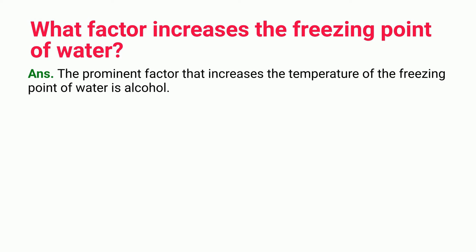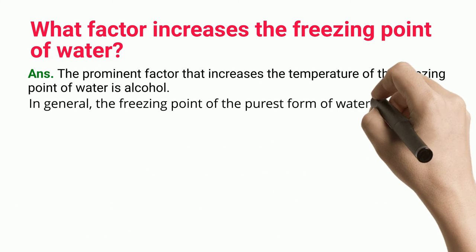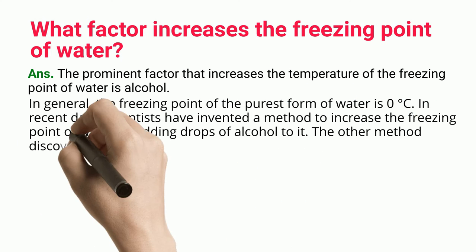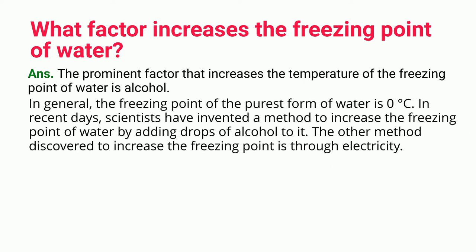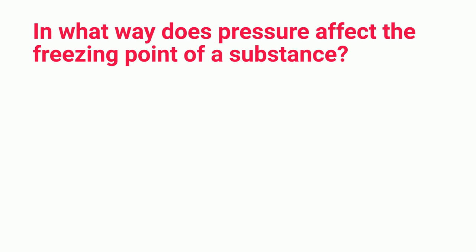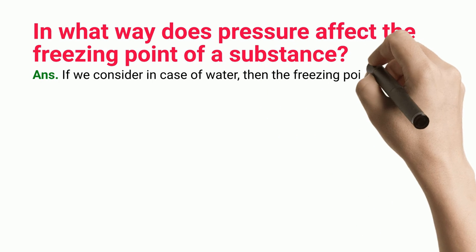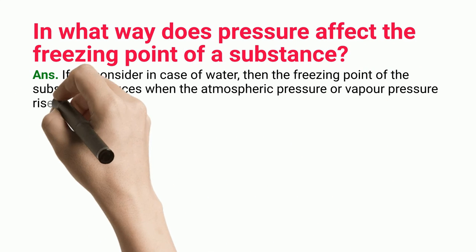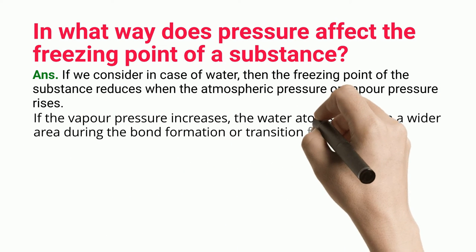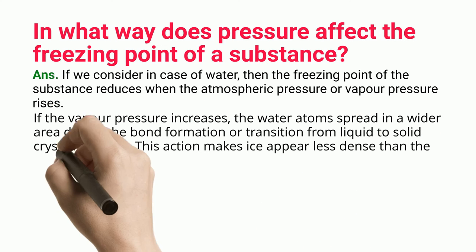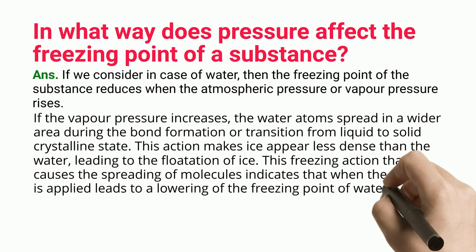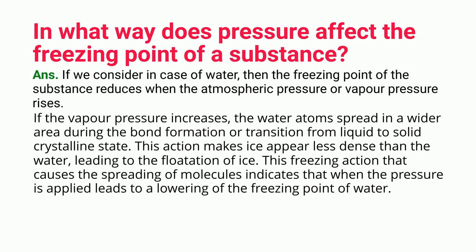What factor increases the freezing point of water? The prominent factor that increases the freezing point of water is alcohol. In general, the freezing point of the purest form of water is 0°C. Scientists have invented a method to increase the freezing point of water by adding drops of alcohol to it. Another method discovered is through electricity. In the case of water, the freezing point reduces when atmospheric pressure or vapor pressure rises. The water atoms spread in a wider area during the bond formation from liquid to solid crystalline state, making ice appear less dense than water and leading to flotation of ice.